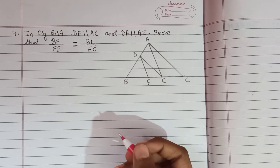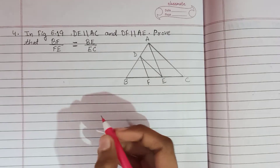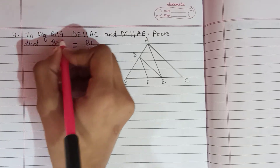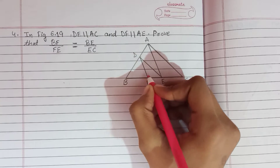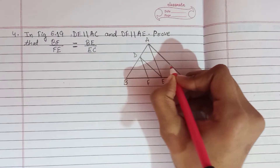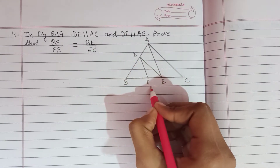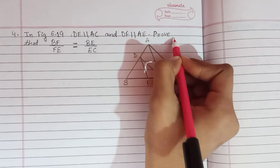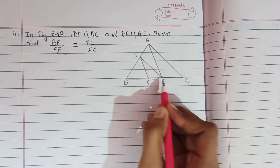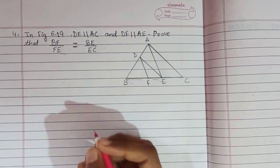Hello guys, I am going to teach you NCERT exercise 6.2 question number 4, which says in figure 6.19, DE is parallel to AC and DF is parallel to AE. We have to prove that BF by FE is equal to BE by EC.